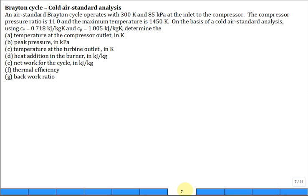So here we have an air standard Brayton cycle operating with 300 Kelvin and 85 kilopascal at the inlet to the compressor. So that's T1 and P1 specified.